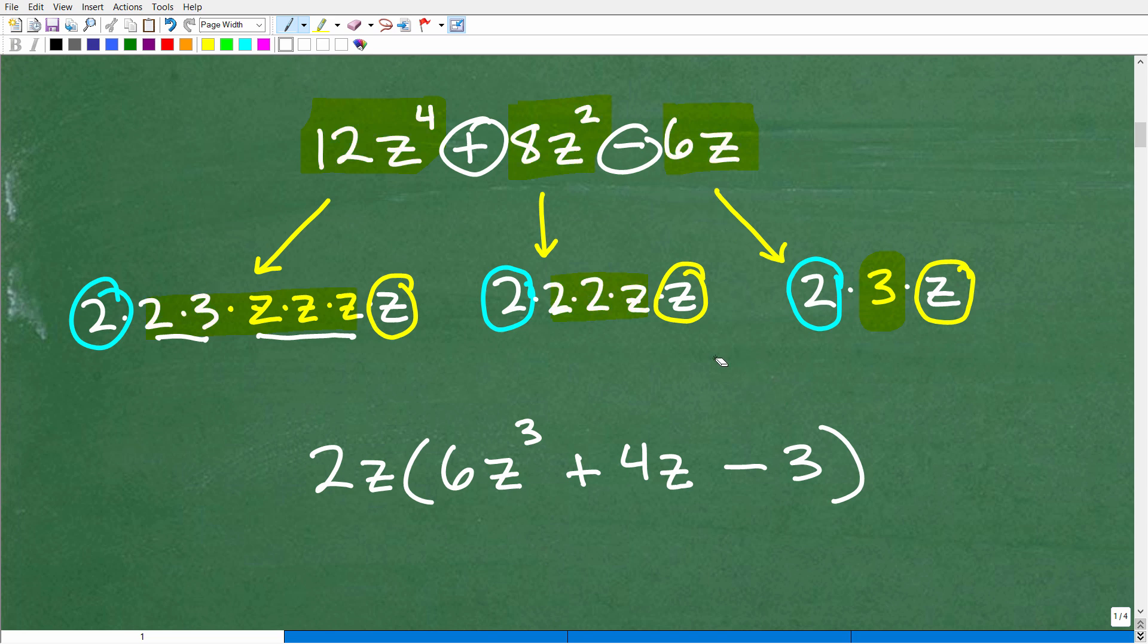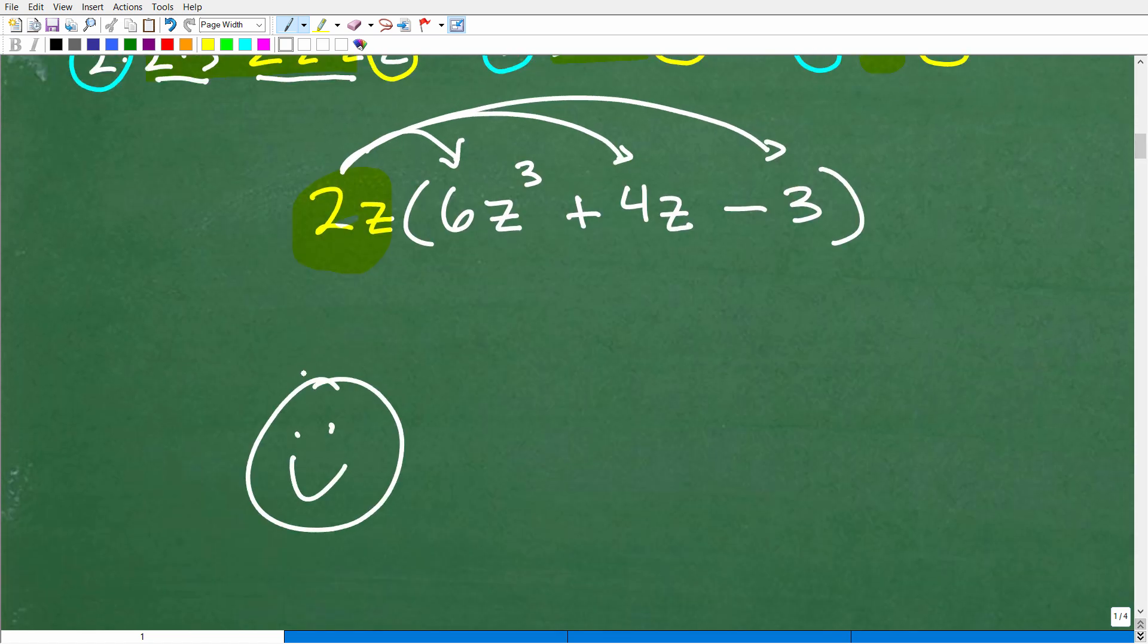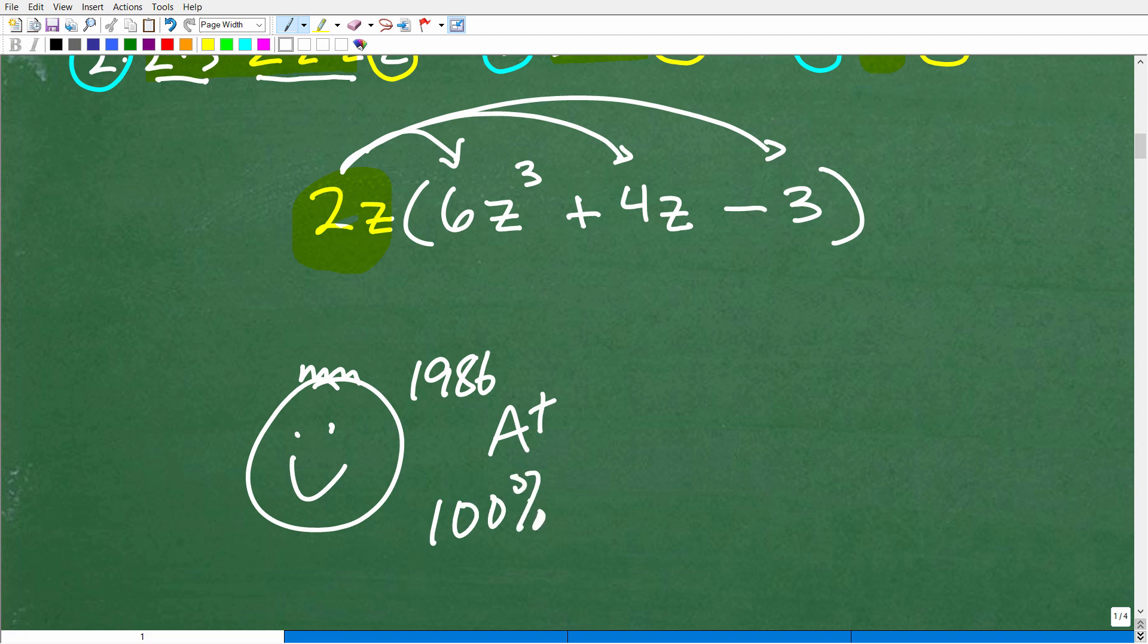So let's just go ahead and check our work. If I was to apply the distributive property, I would have 2z. If I multiply it by here, I should get back to this 12z to the fourth. 2z times 6z³ is, in fact, 12z to the fourth. Now let's check this second term. So 2z times 4z should give me 8z². So that works out. Now remember, I have a subtraction sign here. So 2z times 3 gets me back to 6z. And that is it. So if you understand this, if you got this right, matter of fact, let me go ahead and give you a nice happy face with the good old 1986 flat top haircut. That was a good year. Matter of fact, I'll give you an A plus and 100%. I don't know what you're doing, but it seems like you understand factoring. Maybe you've been following that guy on YouTube that teaches math.